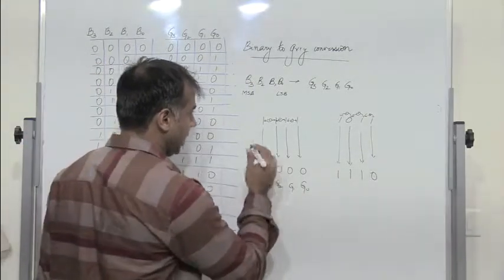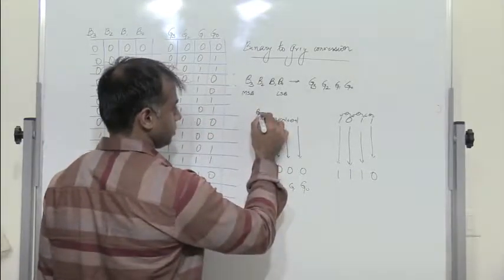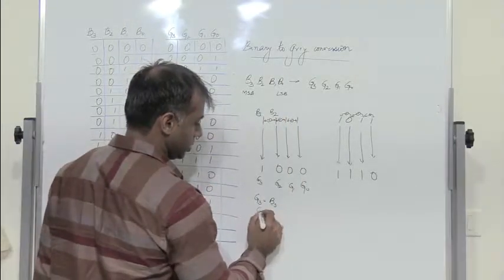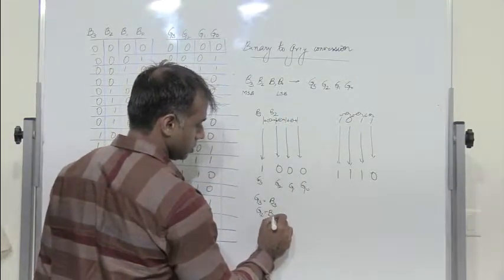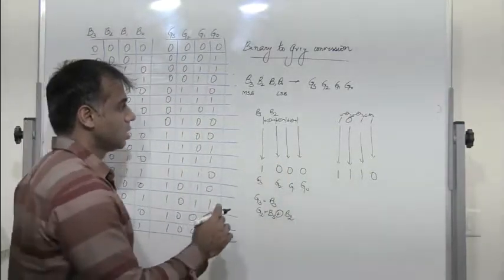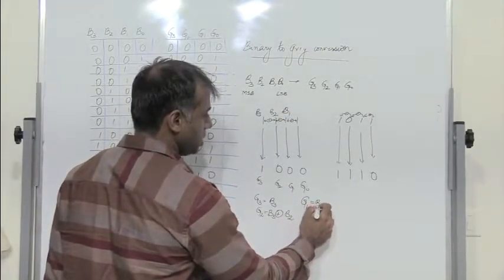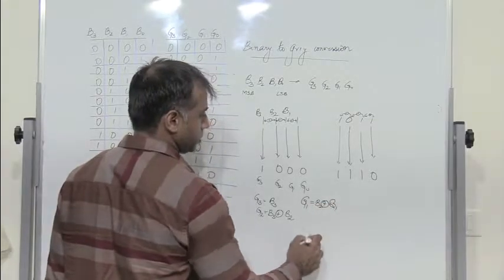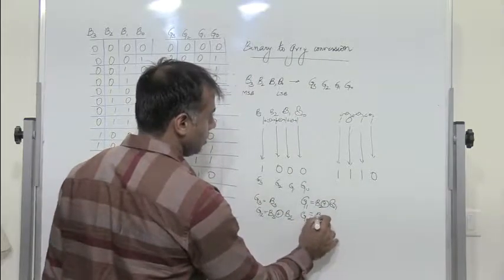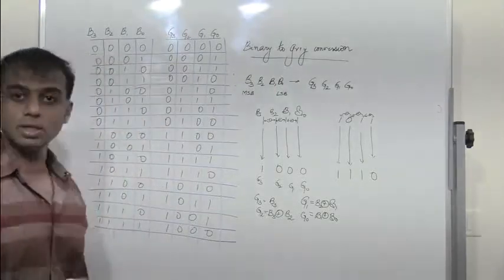The expression basically is: G3 is nothing but B3. G2 is B3 XOR with B2. G1 is B2 XOR with B1. And G0 is B1 XOR with B0. These are the expressions.